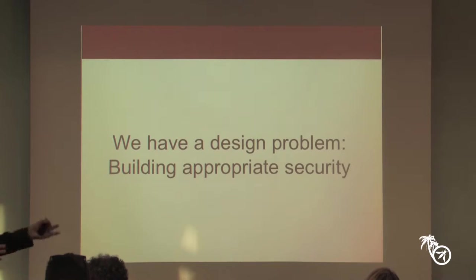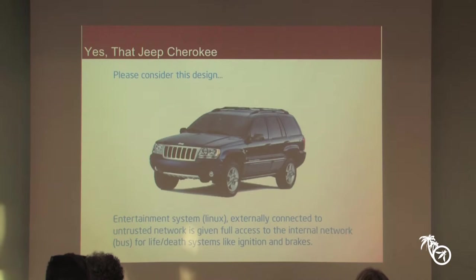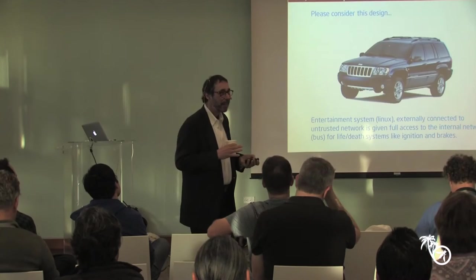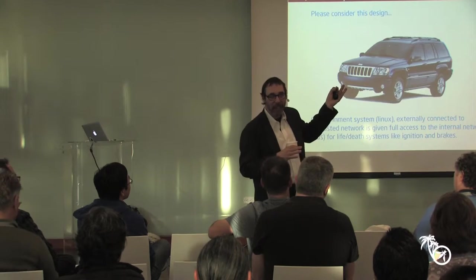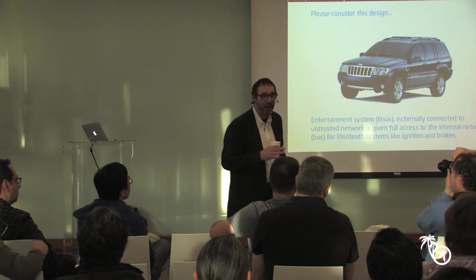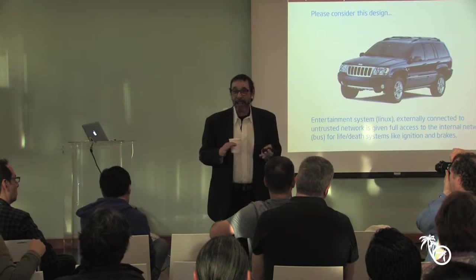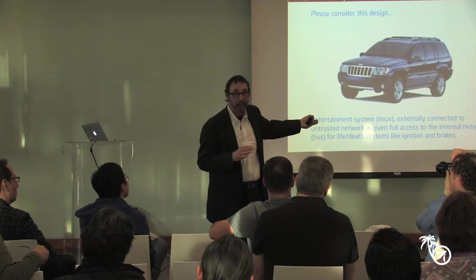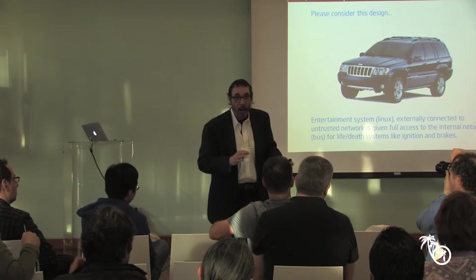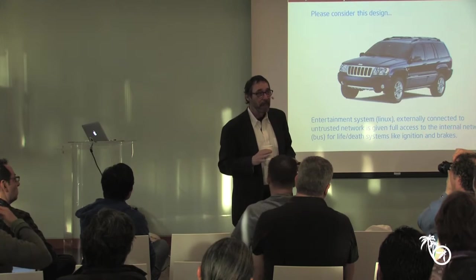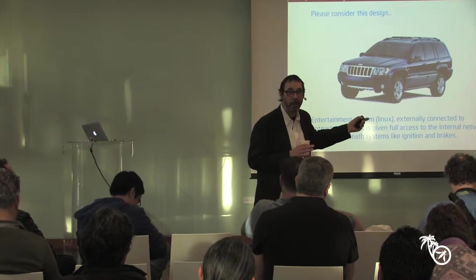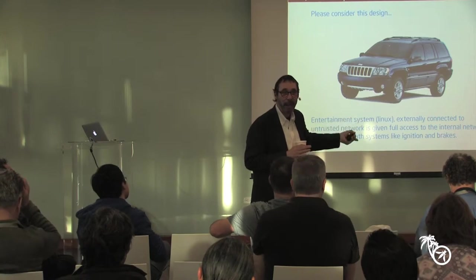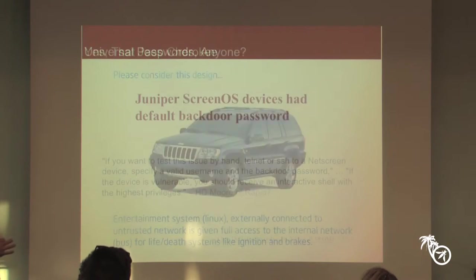So let me set the problem, the essential problem we're working on here. We have a design problem in software security. We have to build appropriate security. How do we get there? Let me make some points here. Everybody know about the Jeep? My friend Chris Valasek and someone else got onto the entertainment system and then started mucking with the brakes and the ignition on the car while it was going down the road. So is that a coding problem?